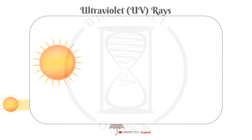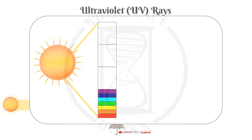The sun is a source of energy that emits electromagnetic radiation that travels as waves. With our eyes, we are able to see a short range of those waves, which is what we call visible light. Beyond the red spectrum we find infrared rays, and beyond the violet spectrum we find ultraviolet rays, which can be UVA, UVB, and UVC rays.